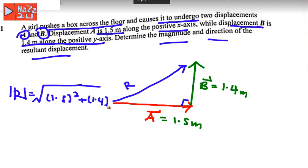So the magnitude of vector R is equal to 2.05 meters.